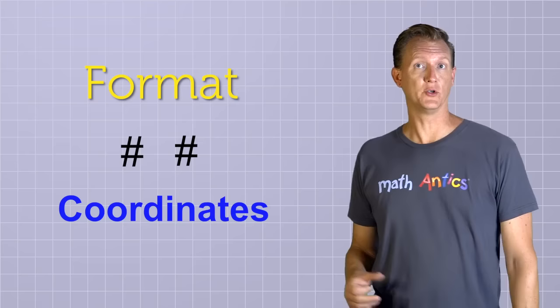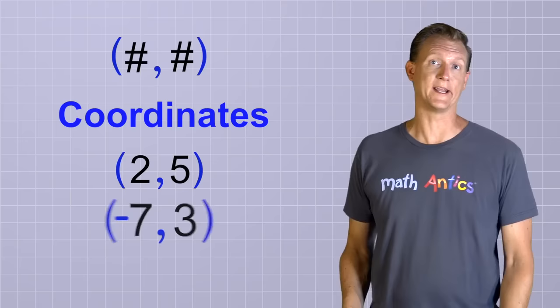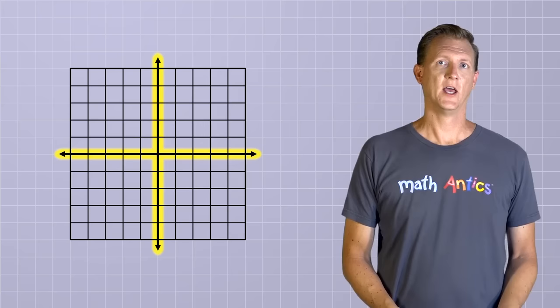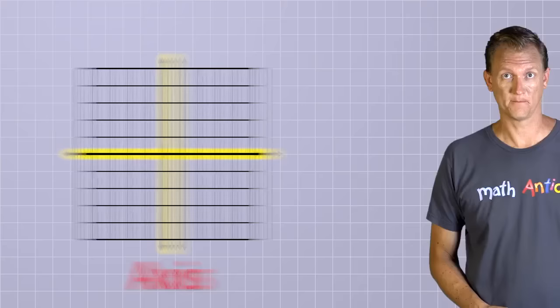Coordinates use a special format to help you recognize them. The two numbers are put inside parentheses with a comma between them as a separator. So when you see (2, 5), or (-7, 3), or (0, 1.5), you know you're dealing with coordinates. Okay, to understand how coordinates work, remember that our number plane is formed by combining two perpendicular number lines.